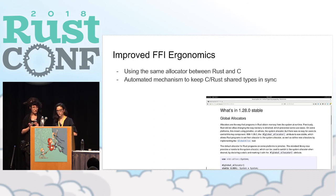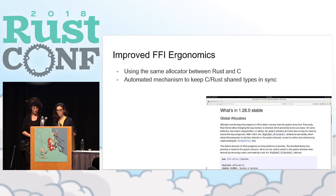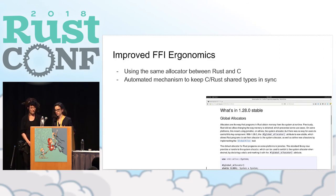Another thing we want to do in the future is have some kind of automated mechanism to keep C and Rust shared types in sync. We tried to keep our Rust interfaces pure Rust and our C interfaces pure C with a translation layer in between, largely for safety. But this means we have duplicated types across the language boundary, and keeping those in sync has proven challenging — we're worried about bugs there in the future.